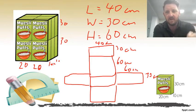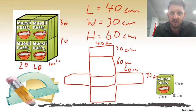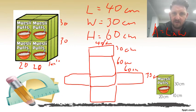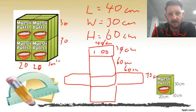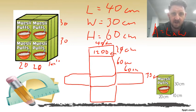Area equals length times width. For the top face, 40 times 30 — cross out the two zeros, four times three is 12, so that's 1200 centimeters squared. For the next face, 60 times 40 — cross out the two zeros, six times four is 24, so that's 2400 centimeters squared.